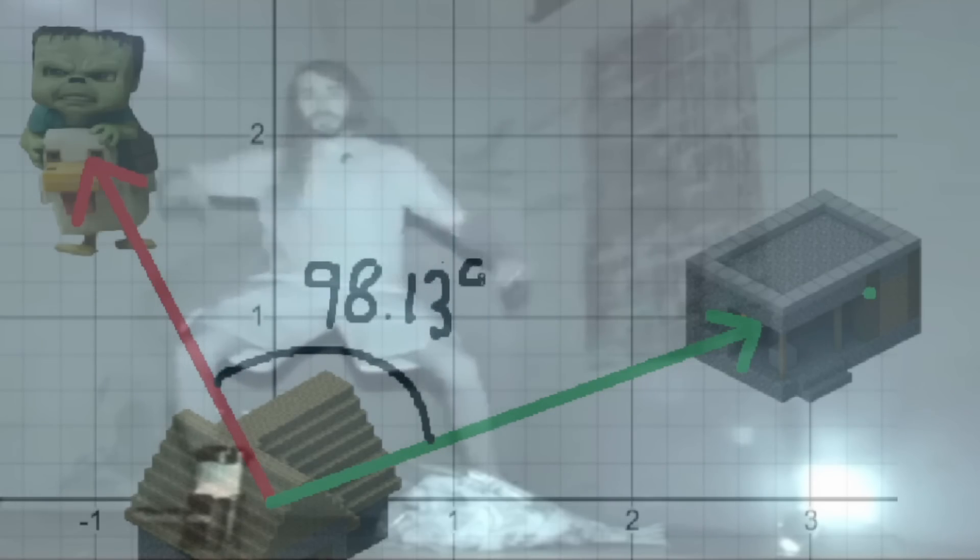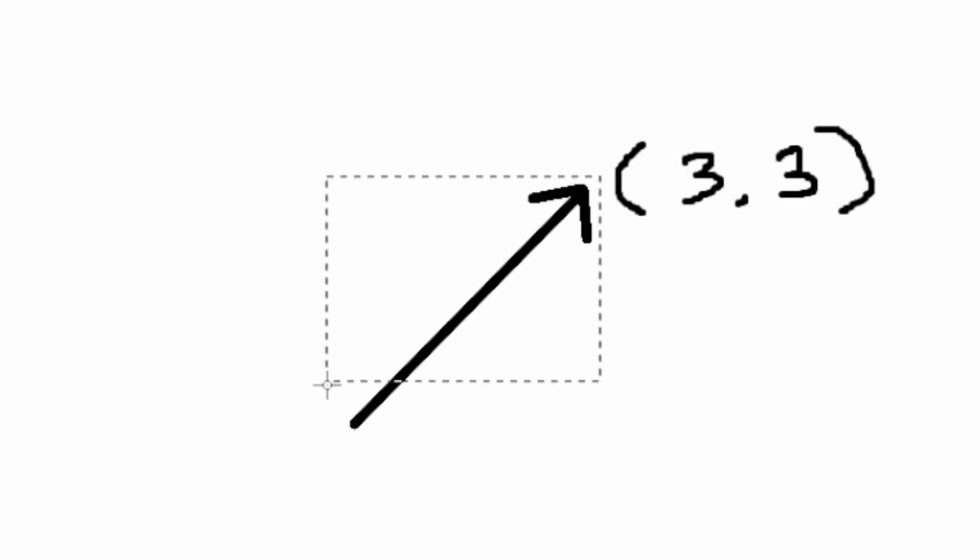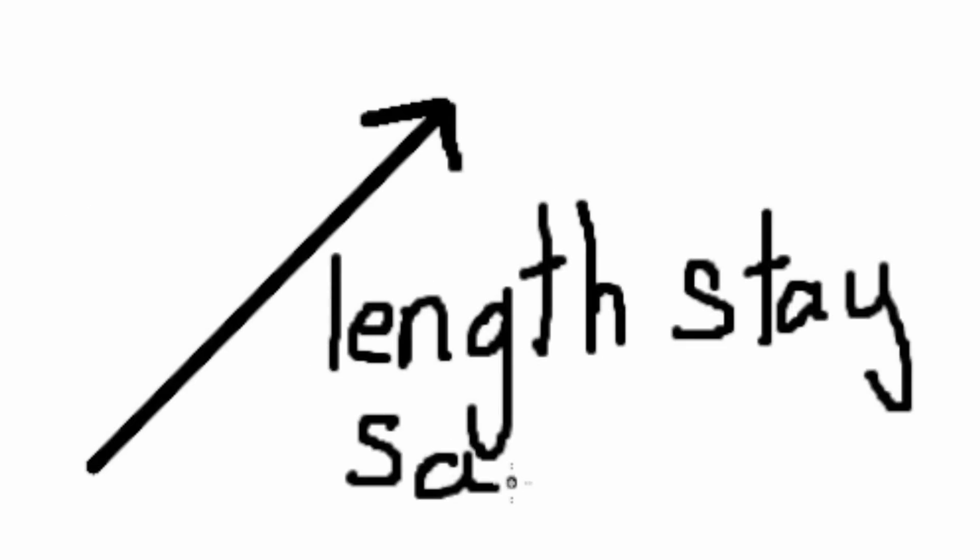But what if we wanted to rotate a vector by exactly 90 degrees? When we rotate this vector, we want its length to stay the same, the magnitude, but change its direction.